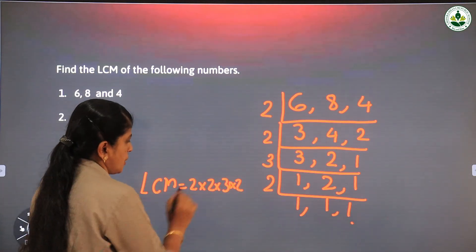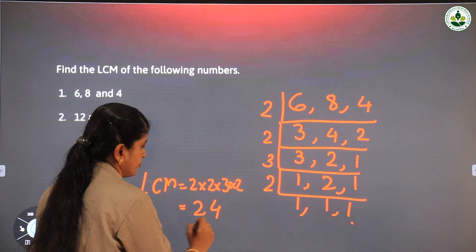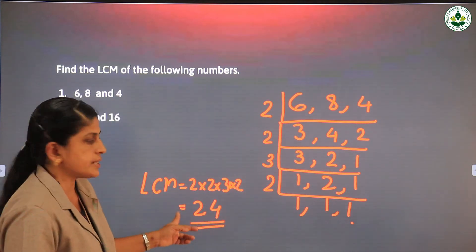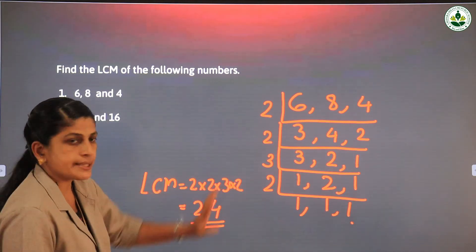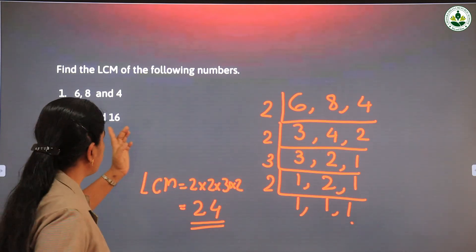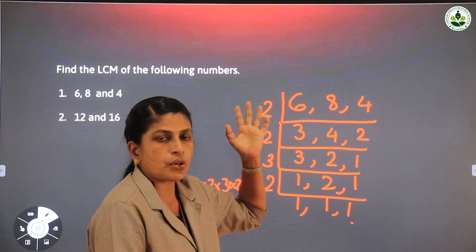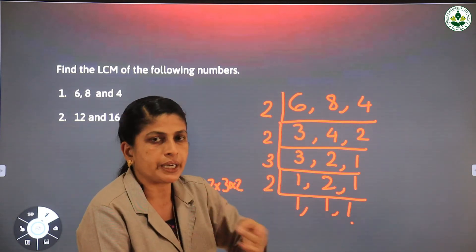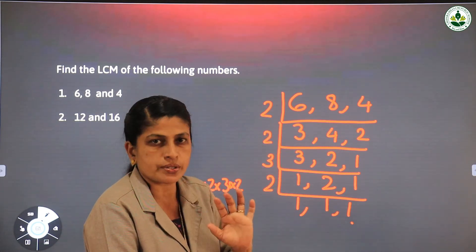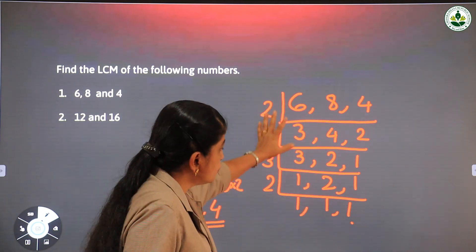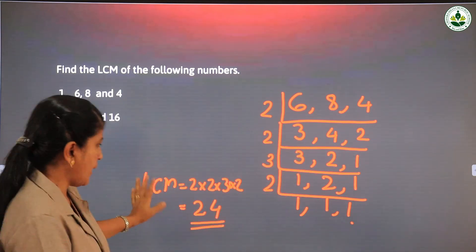So LCM = 2 × 2 × 3 × 2 = 24. Therefore 24 is the lowest common multiple of 6, 8, and 4. This division method is much easier than writing out all the multiples. This is the method we follow in higher classes, so learn and follow this method when finding the LCM.